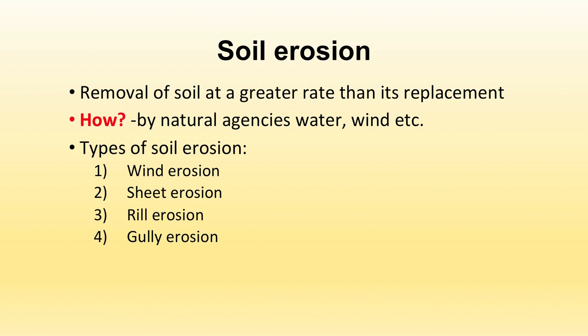Soil erosion occurs by natural agencies like water and wind. There are four different types of soil erosion: wind erosion, sheet erosion, rill erosion, and gully erosion. We will be dealing with all four types in detail.